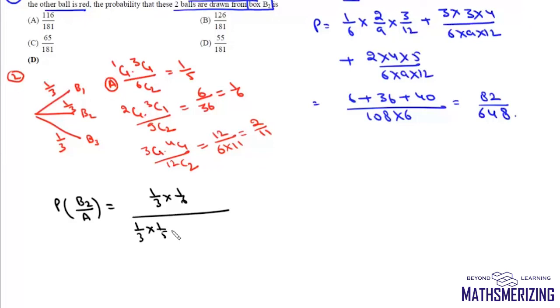So this is 1 by 3 into 1 by 5 plus 1 by 3 into 1 by 6 plus 1 by 3 into 2 by 11. Now this 3 will get cancelled.